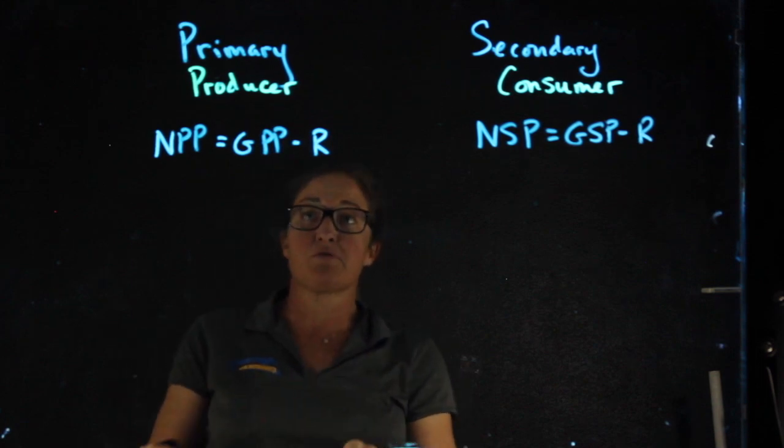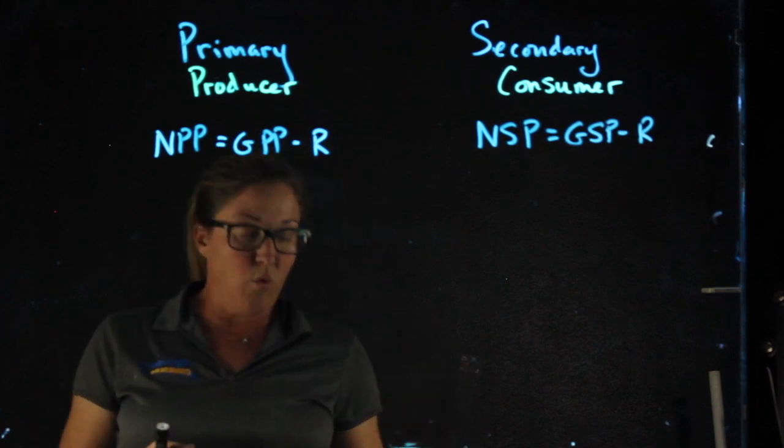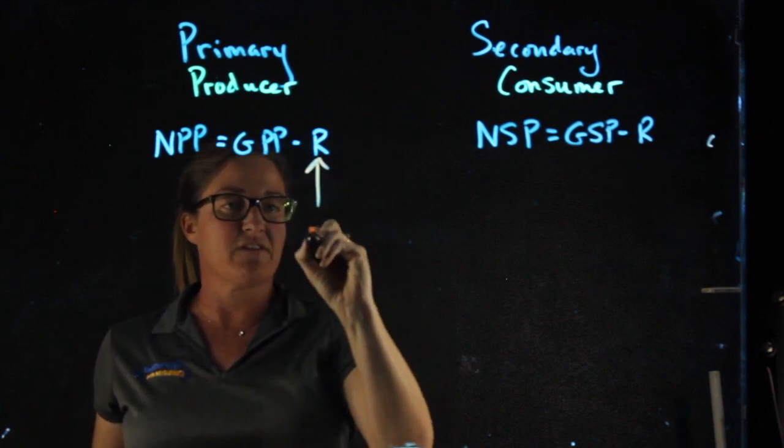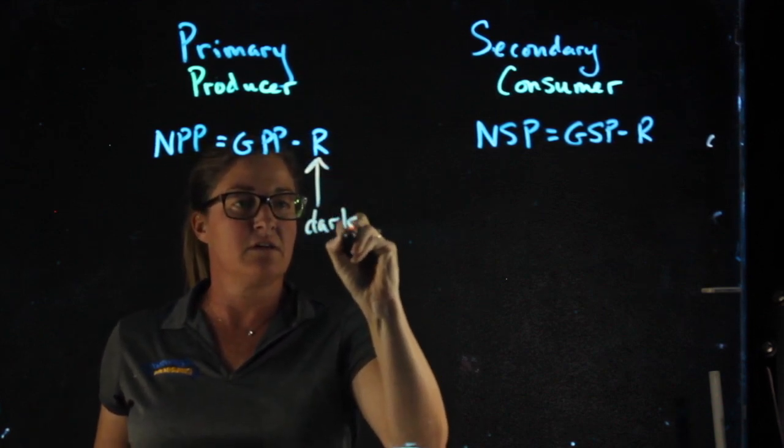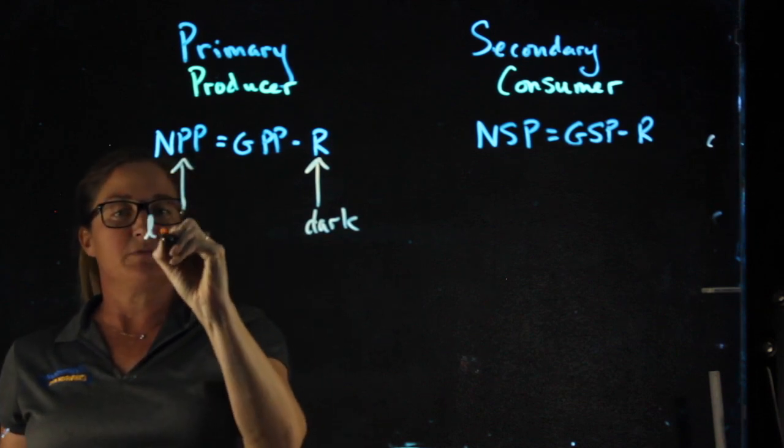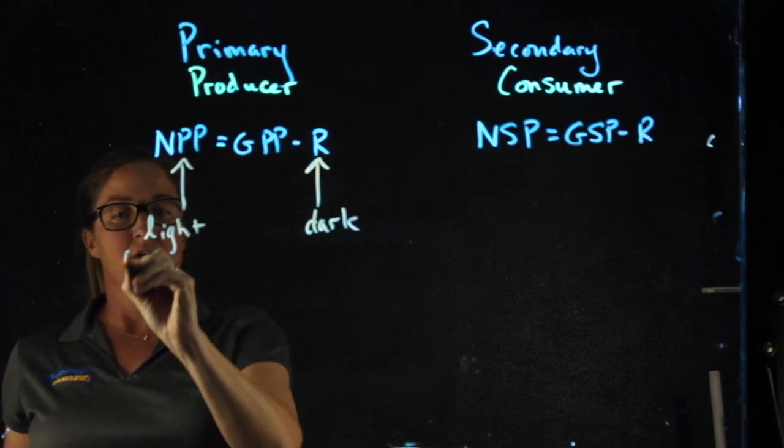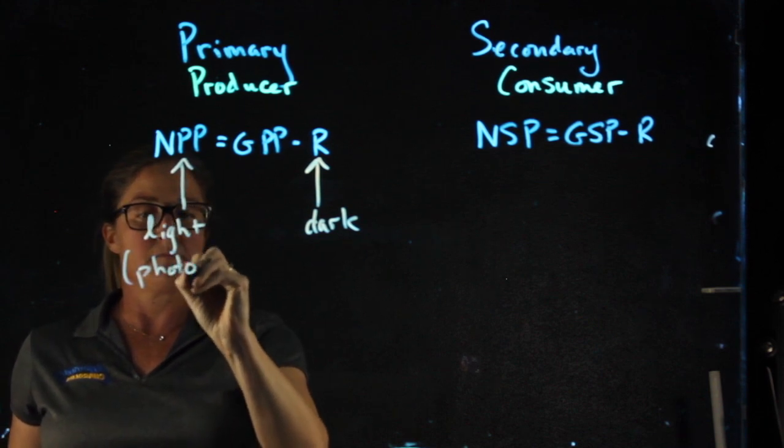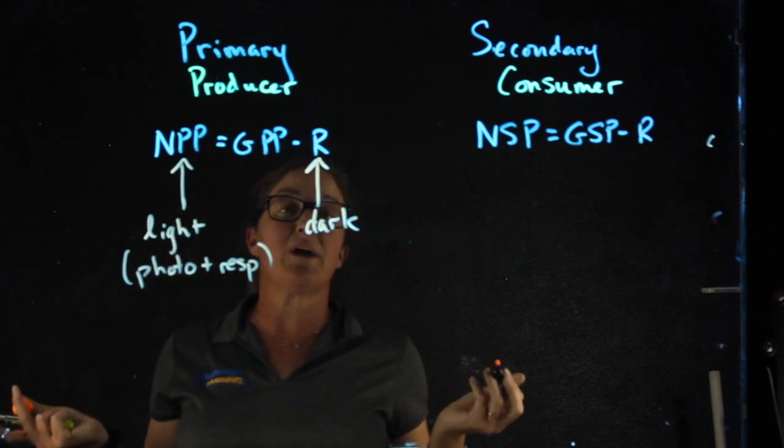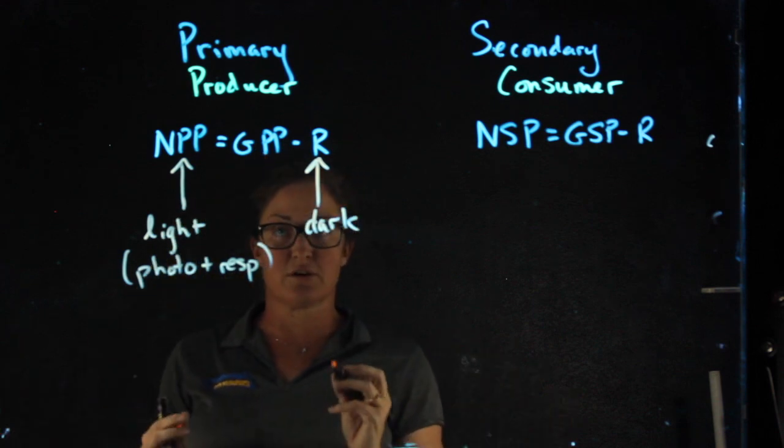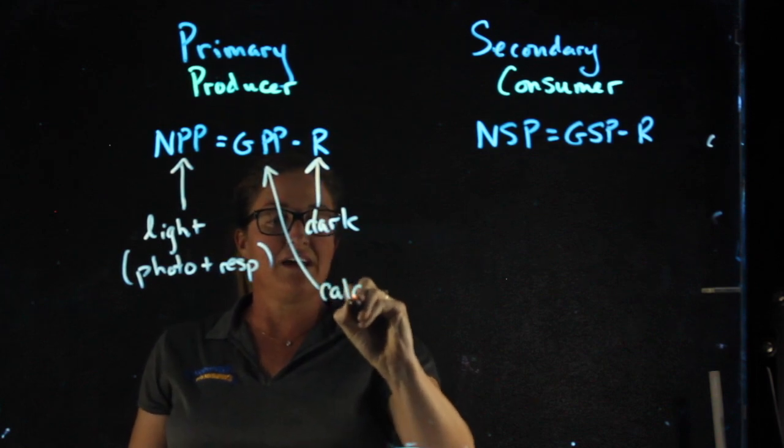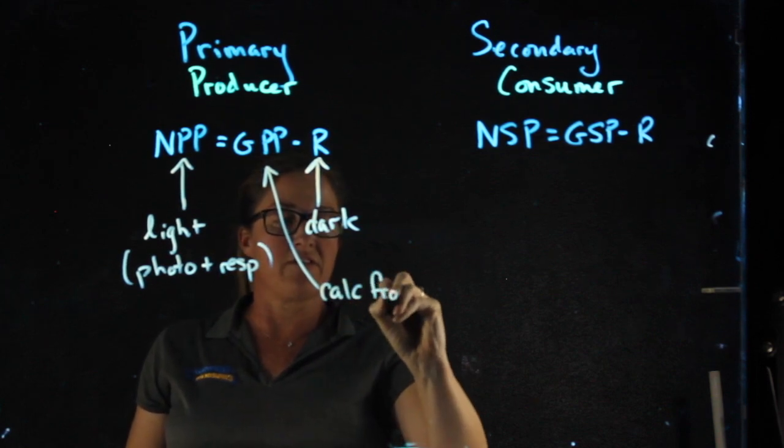For primary productivity, we determine the amount of respiration by whatever the plant did in the dark. We determine the net by whatever the plant did in the light. The gross primary productivity is the amount of photosynthesis only, but there's no way to make a plant photosynthesize without also respiring. As a result, we're always going to calculate this one from the others.